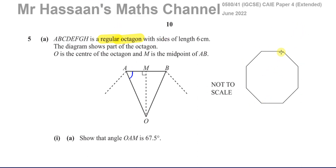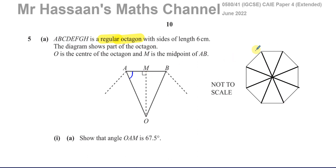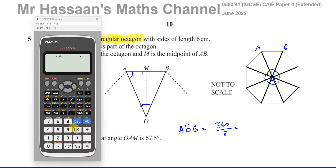I'm going to join these opposite corners together just to illustrate something. When you do this, you basically have eight triangles — they're all identical, all congruent. So all eight of these angles at the center are equal to each other. The whole thing is 360° and there are eight of them, so the angle AOB is 360 divided by 8, which gives us 45 degrees.